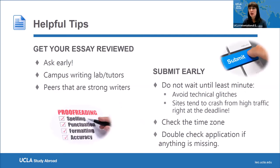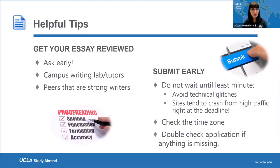Get your essay reviewed — it's very important. Grammar mistakes or poorly written essays will cost you points. Ask campus writing labs, tutors, the Scholarship Resource Center, or peers who are strong writers to review it, and start early. Submit the application early as well — do not wait until the last minute because sites tend to crash. Also check the time zone if you're applying for a scholarship from an East Coast provider, as you may miss the deadline if you wait. Double-check that the application is not missing anything.